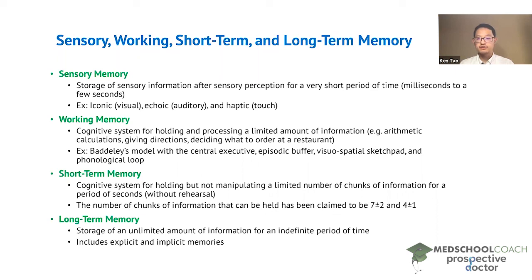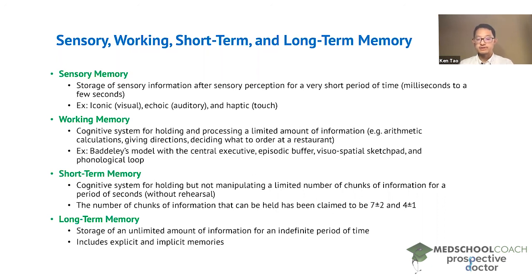Finally, we have long-term memory. Long-term memory is the storage of an unlimited amount of information for an indefinite period of time — information you want to store in your brain and be able to recall at any point in time. This includes both explicit and implicit memories, which will be described in another video. In general, long-term memory is exactly what it sounds like: information stored essentially for the life of our brain.